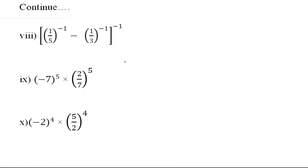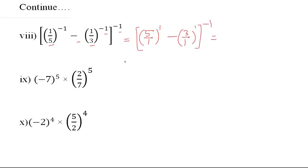Eighth: 1 upon 5 whole raise to the power negative 1 minus 1 upon 3 whole raise to the power negative 1, whole raise to the power negative 1. First solve the bracket: applying the law gives 5 upon 1 whole raise to the power 1 minus 3 upon 1 whole raise to the power 1, whole raise to the power negative 1. This simplifies to 5 minus 3, whole raise to the power negative 1, which is 2 raise to the power negative 1, which we write as 1 upon 2. That is the final answer.